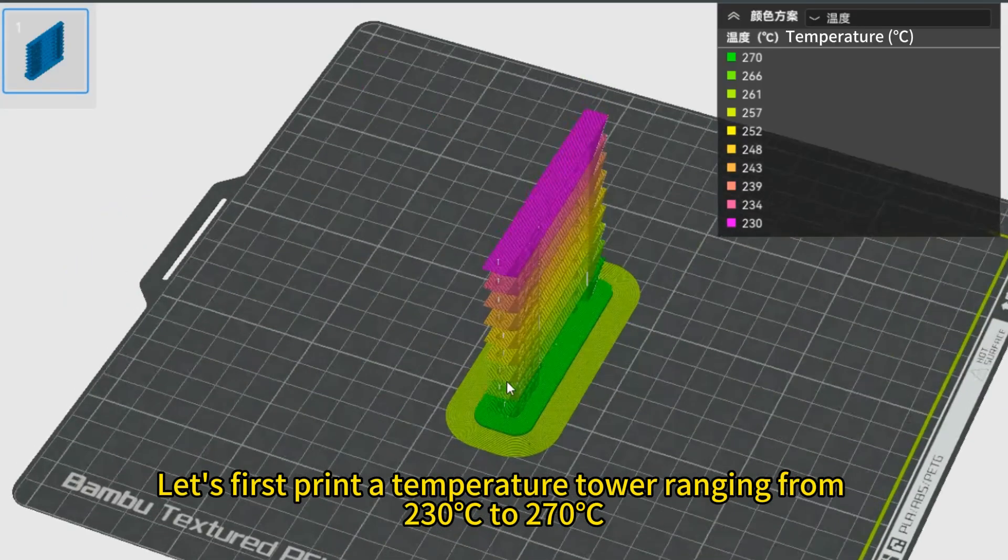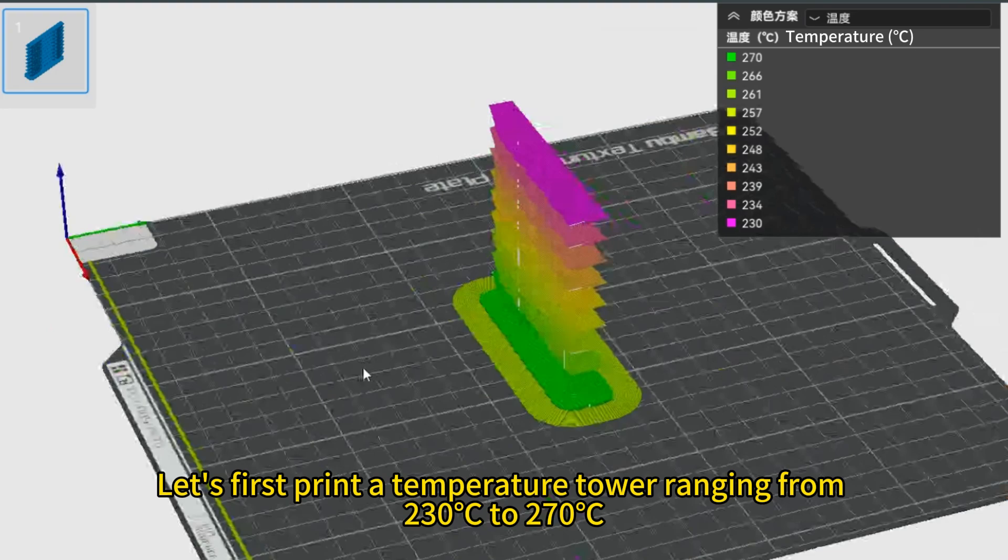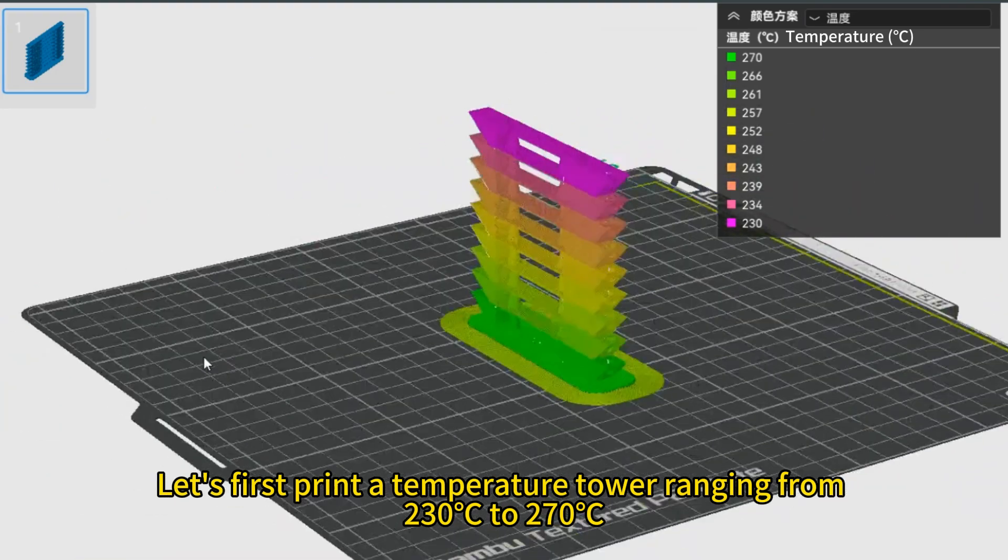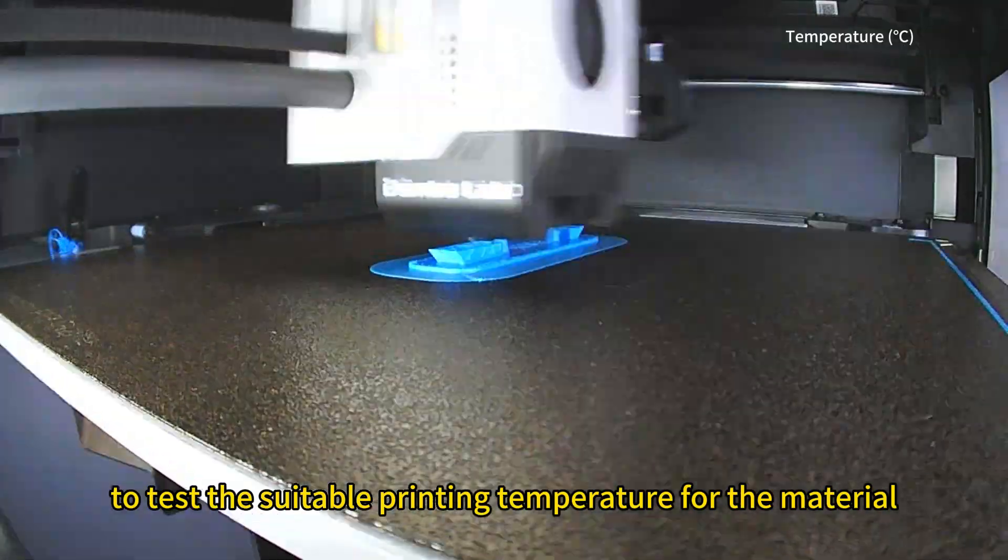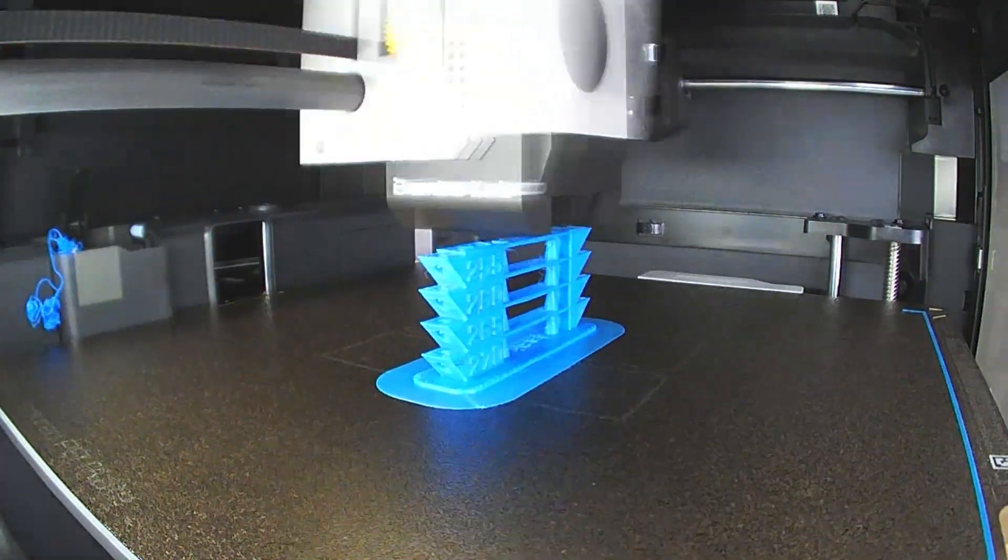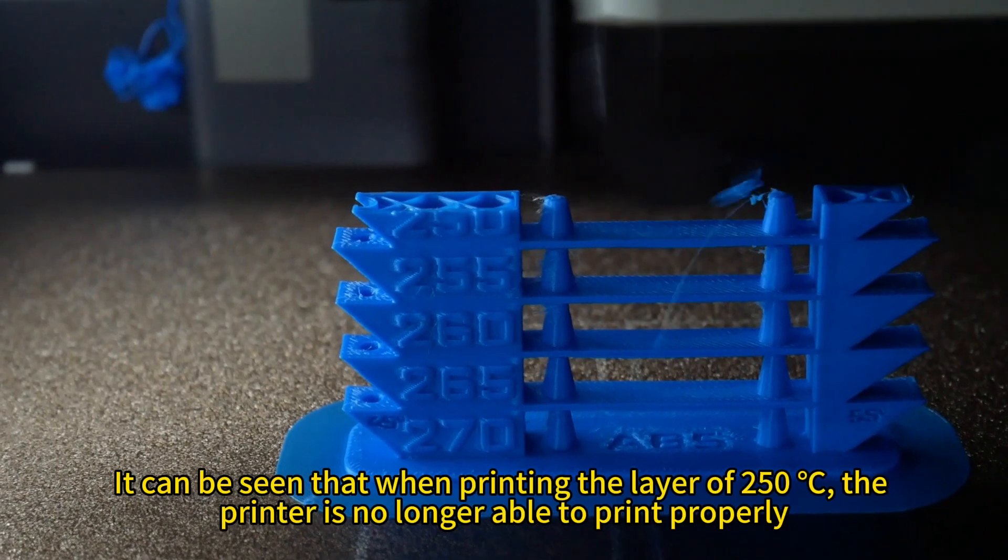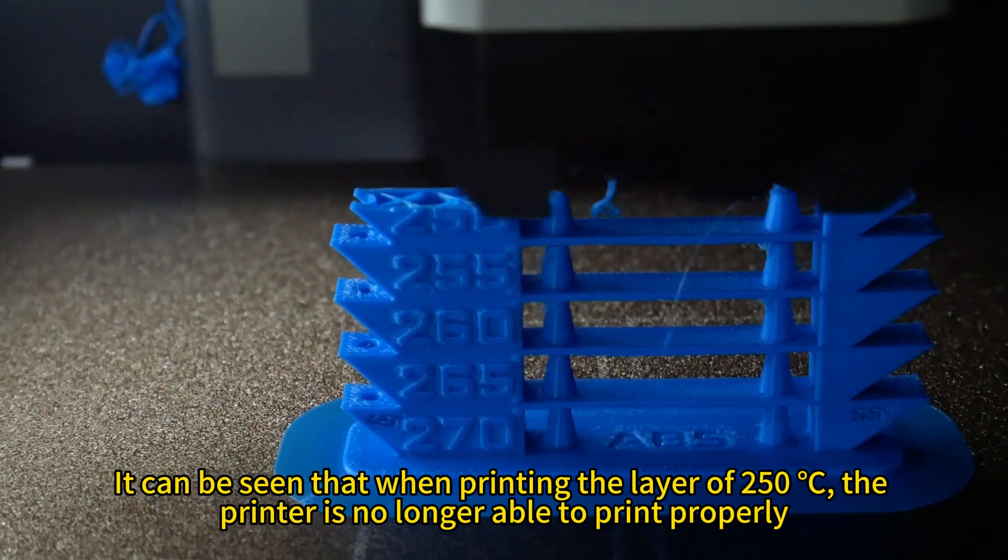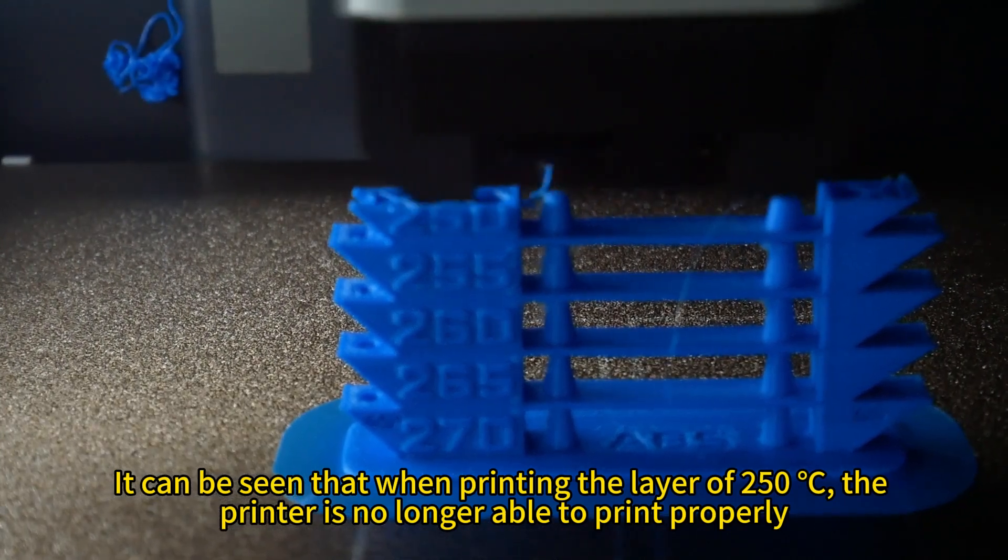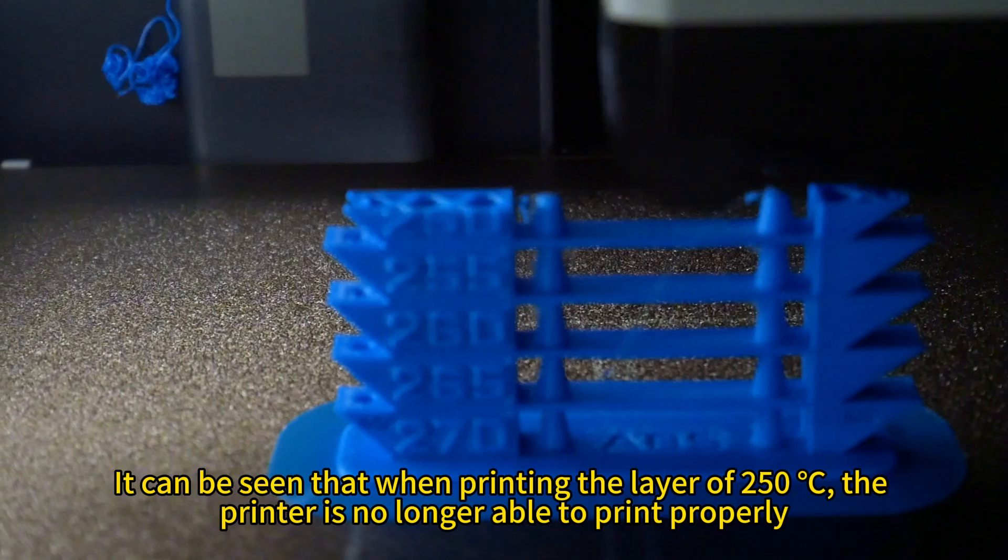Let's first print a temperature tower ranging from 230 to 270 degrees Celsius to test the suitable printing temperature for the material. It can be seen that when printing the layer of 250 degrees Celsius, the printer is no longer able to print properly.